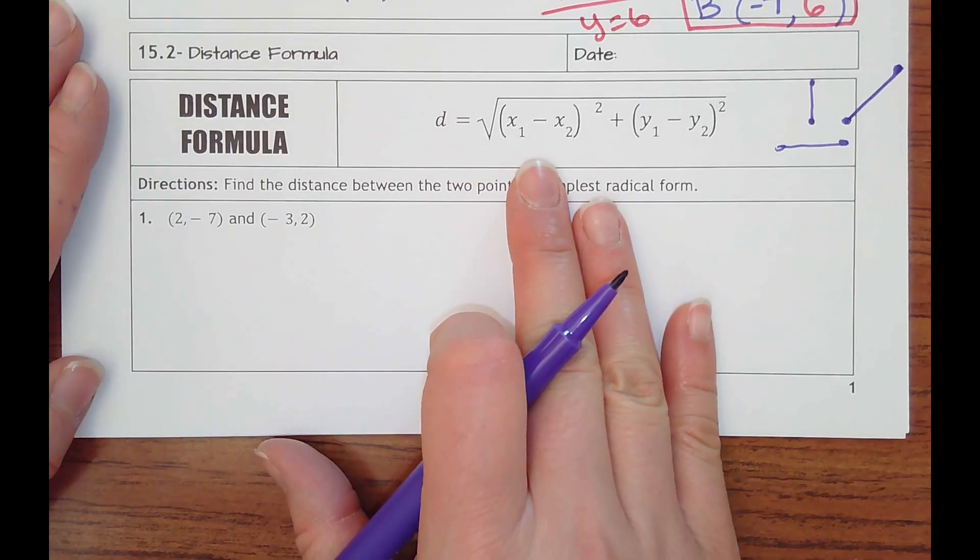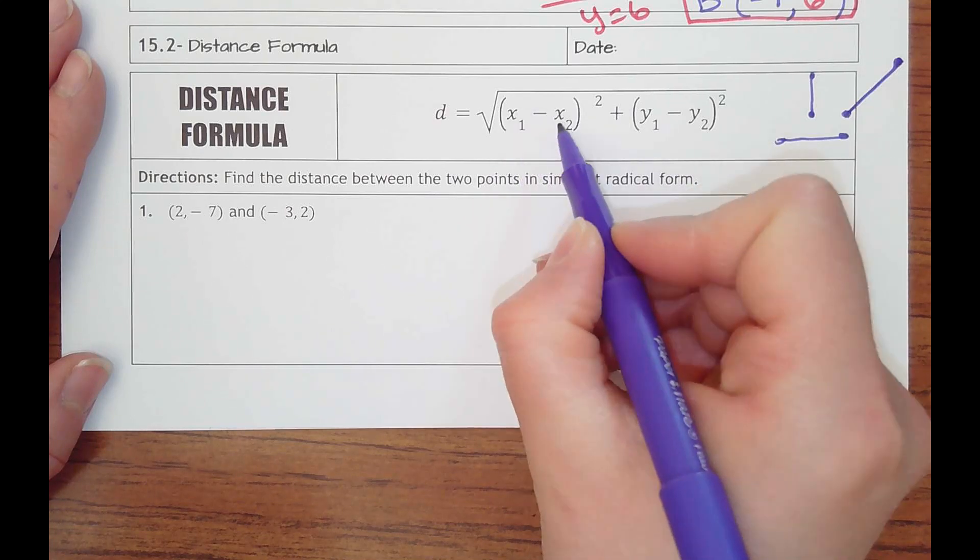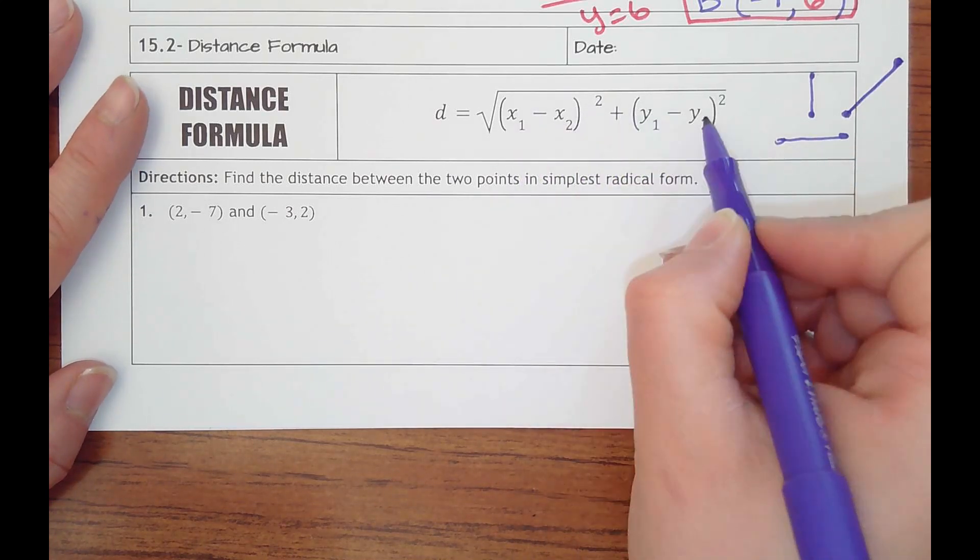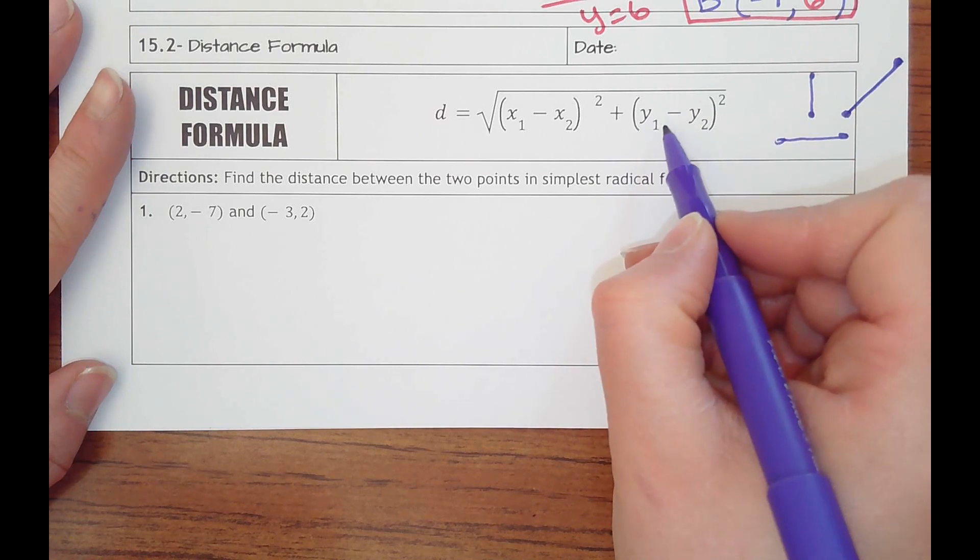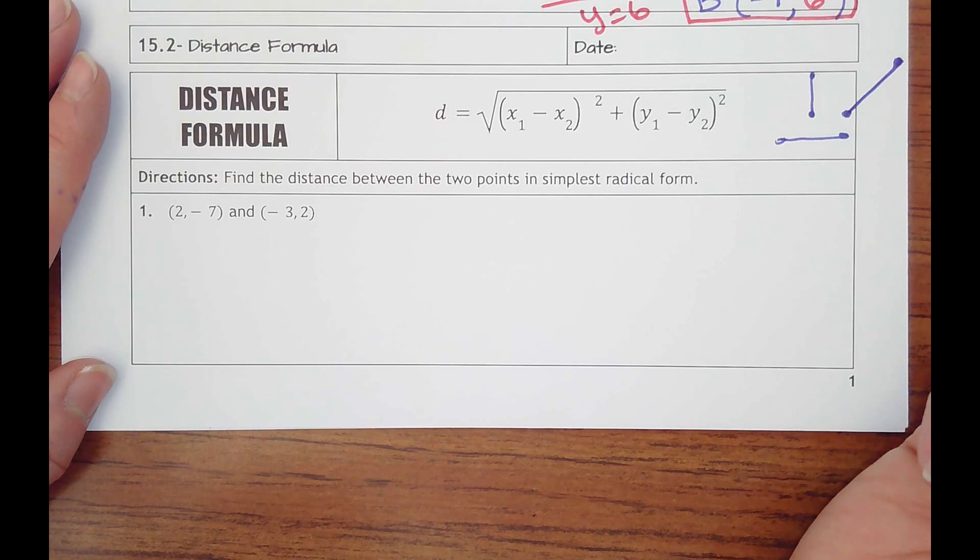And so what we have here is this formula that looks tricky. It's really not. It's just saying you're going to subtract your x values and square that number and then add to that the difference in your y values squared. So it'll always turn out positive because distance should be positive.